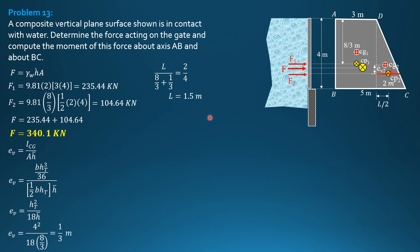So we can now compute the moment of the force about AB. It is the sum of the moments of its components by Varignon's theorem. So let's use that. So it is F1 times half of 3 plus F2, which acts here. The moment arm from axis AB is 3 plus L over 2, where L is 1.5.